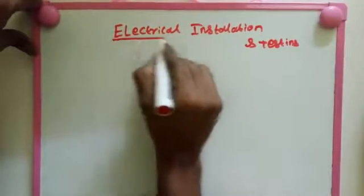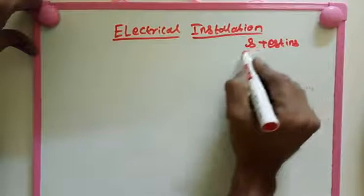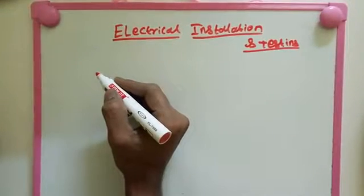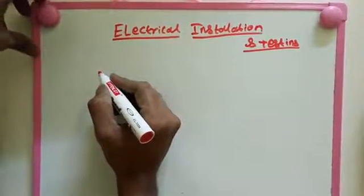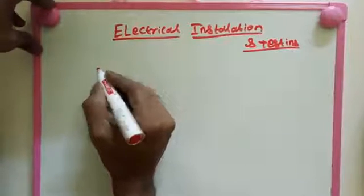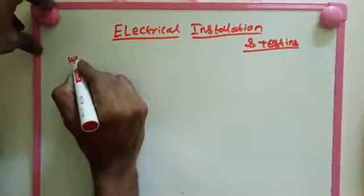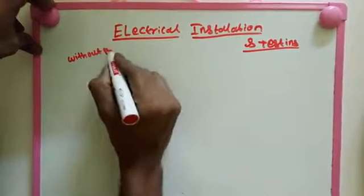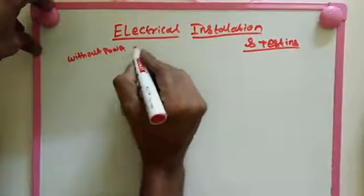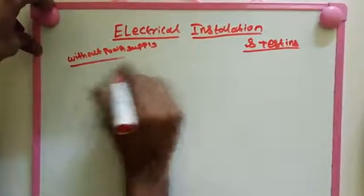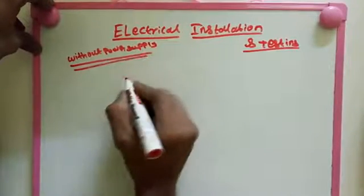Now I'll explain step by step what are the methods we need to check for electrical installation. First one, first we do it without power supply.